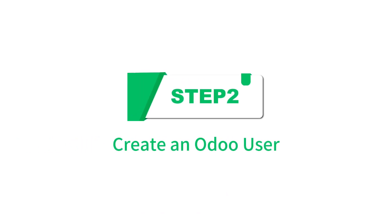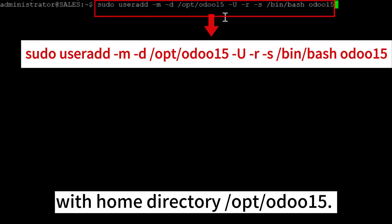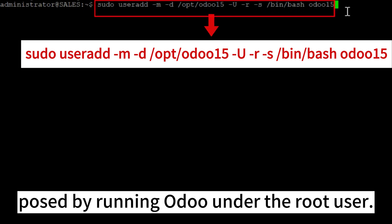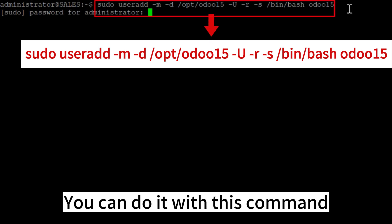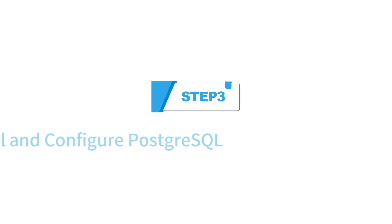Step 2: Create an Odoo User. Create a new user called Odoo 15 with home directory /opt/odoo15. This prevents the security risks posed by running Odoo under the root user. You can do it with this command and give any name to the user.